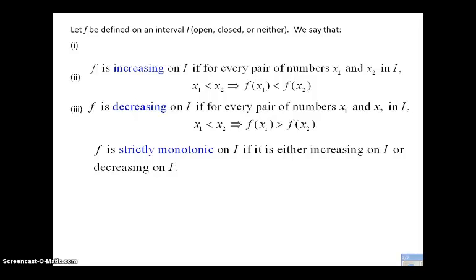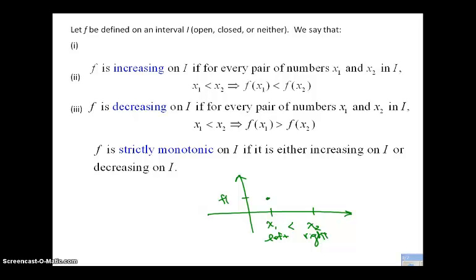Let f be defined on an interval I — it can be open, closed, or neither, and we'll talk more specifically about that later. We say that f is an increasing function on interval I if for every pair of numbers x₁ and x₂ in the interval where x₁ is to the left of x₂ — in other words, x₁ < x₂, which is just a way of saying we always look from left to right — the output value f(x₁) satisfies this relationship.